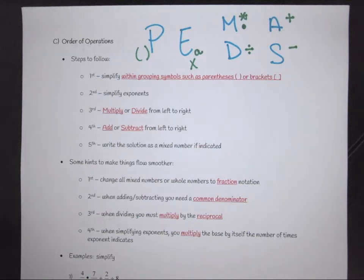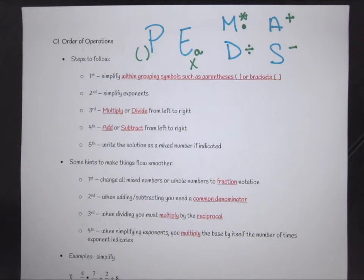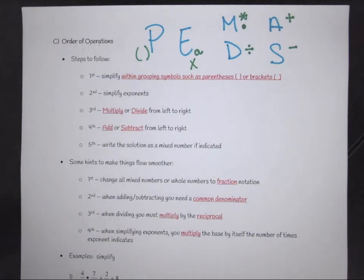Order of operations follows the rule PEMDAS. If we all remember, that stands for 'please excuse me dear aunt something' — when I grew up it was 'dear aunt Sarah,' but through teaching I've learned the S has morphed into many different names. So I now like to say 'please excuse me dear aunt something' and fill in the blank with whatever S word you want to use. It gives you the order in which you're supposed to work things out.